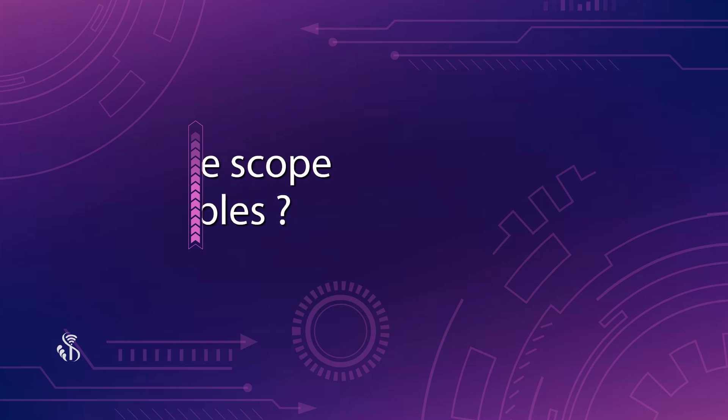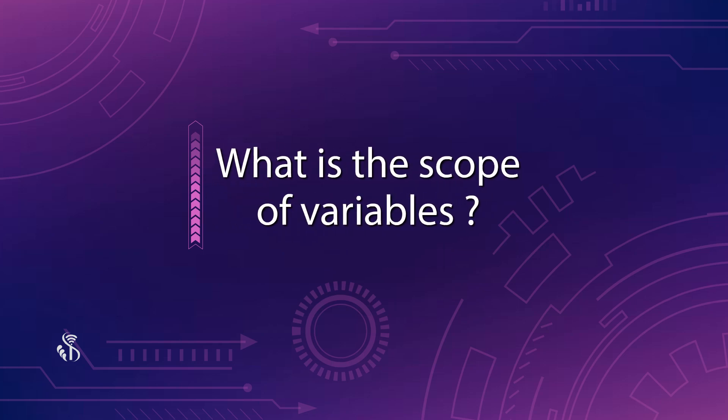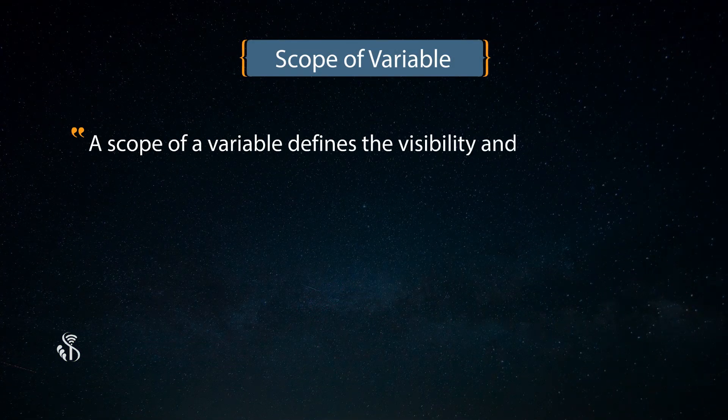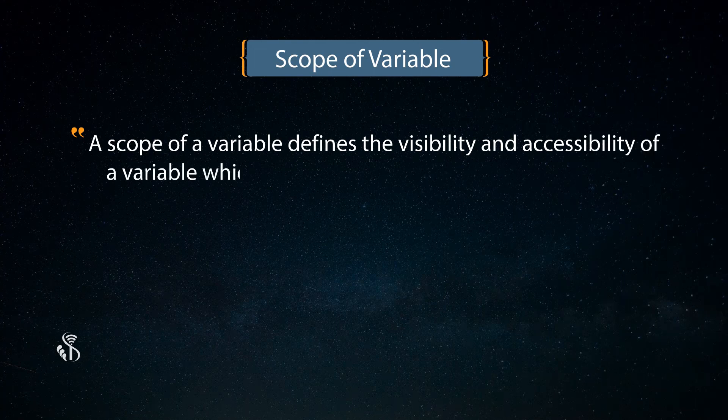Let us understand now what is the scope of variables in Java language. A scope of a variable defines the visibility and accessibility of a variable which is declared and defined in the program.